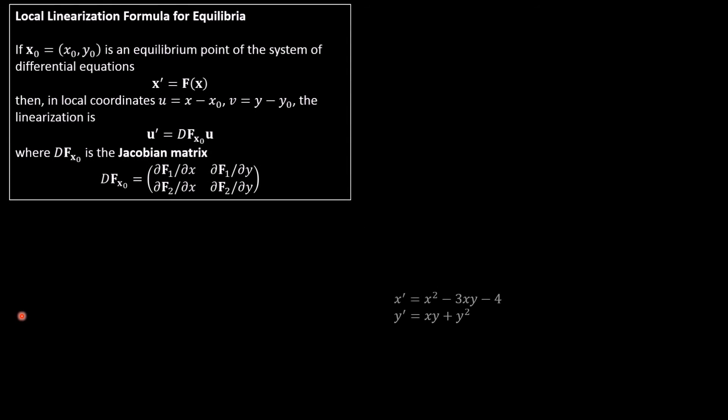df at x naught is called the Jacobian matrix. It's given by taking partial derivatives of the first component of f and the second component of f with respect to x and y. The best way to understand this is just to look at an example. So let's do that now. So in this case, our equations are x prime equals f of x, where this is the first component of f and this is the second component of f. So that's what this is.